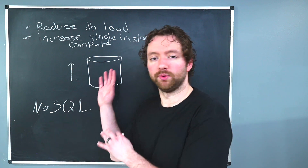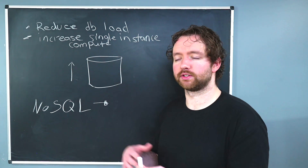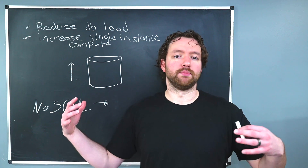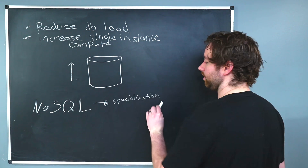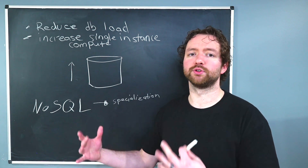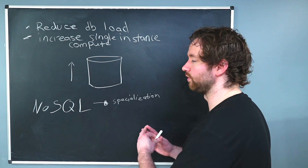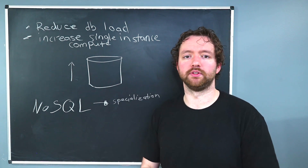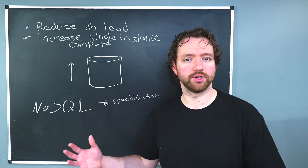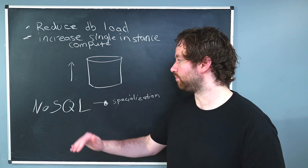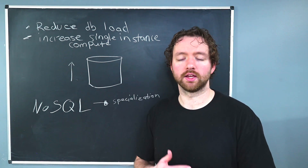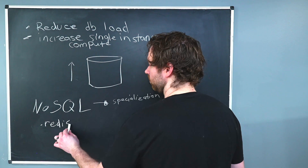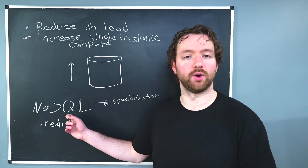NoSQL is a category of databases — it doesn't describe a single database or databases that all work exactly the same way. There are many specialized NoSQL databases that help with specific things. You might use a NoSQL database for a certain part of your application but not everything. Often you'll have a main relational database but use NoSQL databases for specific use cases where they won't store all the data. We've already talked about one of these: Redis, an in-memory cache that can be classified as a NoSQL database.